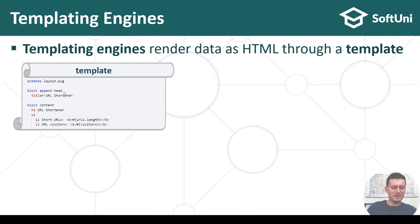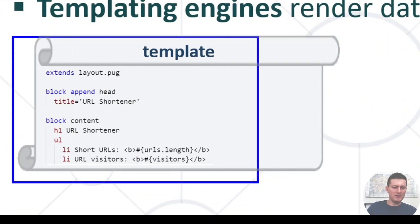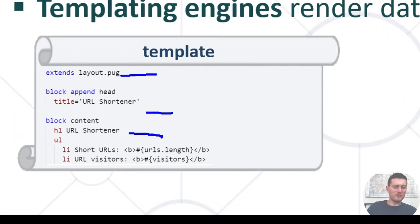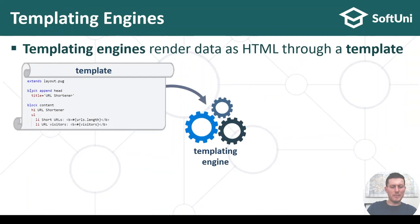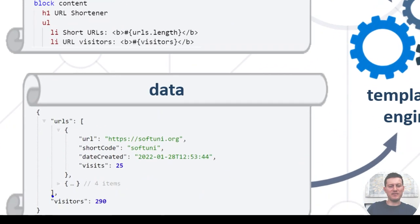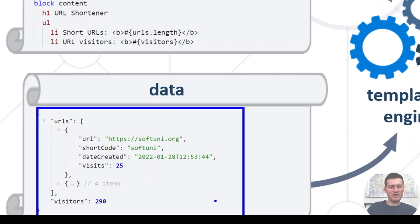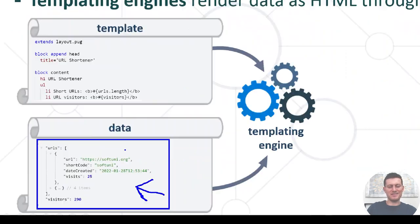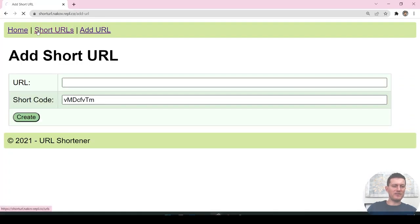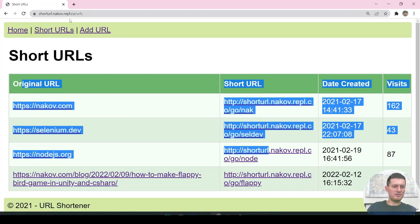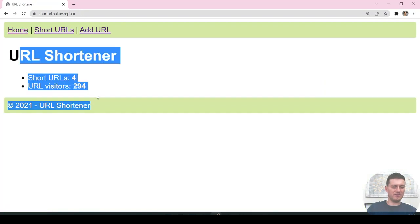If we have a template which defines some user interface, and we have a templating engine — the template takes some data, for example an array or object of JavaScript data — it renders HTML which displays something on screen, like this screen or this screen.